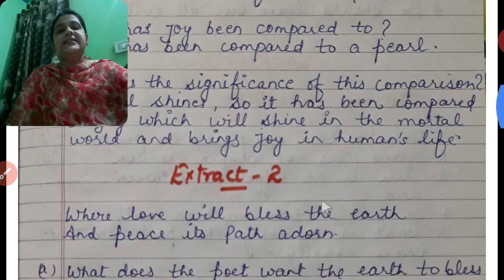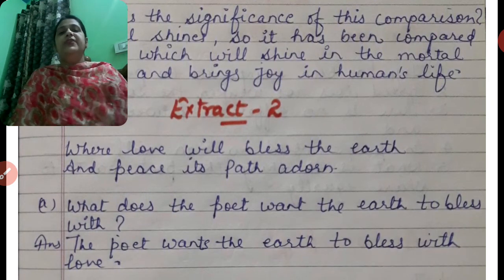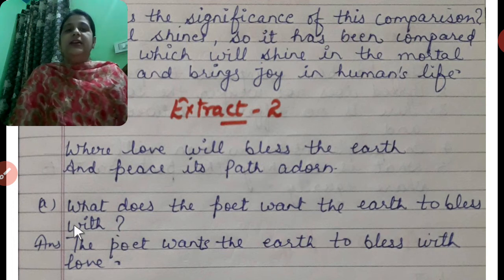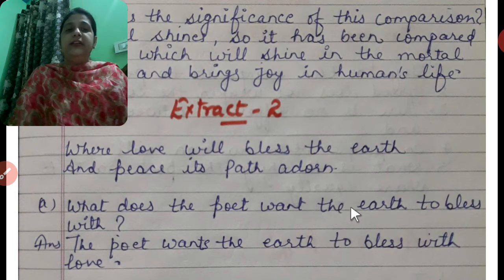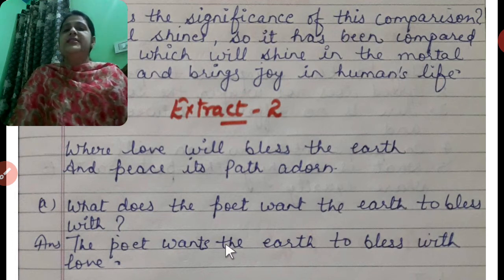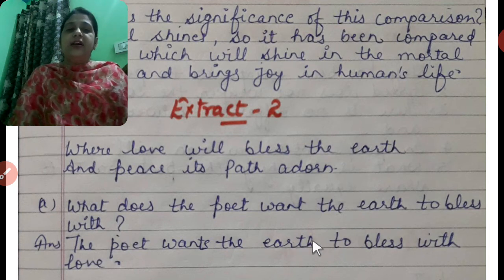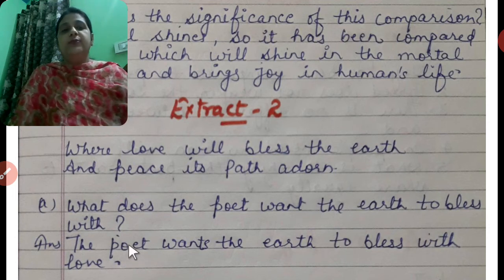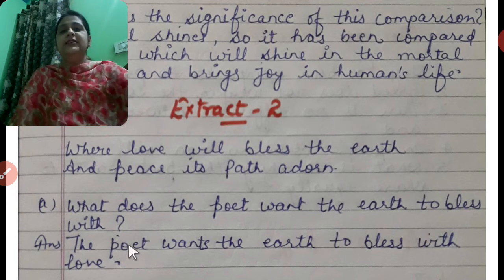Next is extract two: 'Where love will bless the earth and peace its path adorn.' Here, what does the poet want the earth to bless with? The poet wants the earth to bless with love — wo earth ko love se bless karna chahta hai.